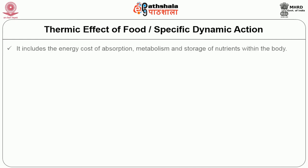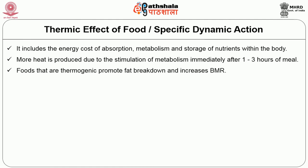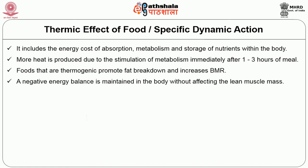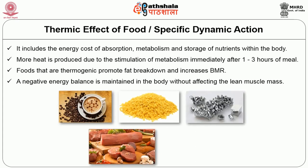Thermic effect of food, also known as specific dynamic action, includes the energy cost of absorption, metabolism and storage of nutrients within the body. More heat is produced due to stimulation of metabolism immediately after 1–3 hours of a meal. Foods that are thermogenic promote fat breakdown and increase BMR, maintaining a negative energy balance without affecting lean muscle mass. Thermogenic foods include caffeine, lecithin, chromium, conjugated linoleic acid in beef, and L-carnitine in meat and dairy products.